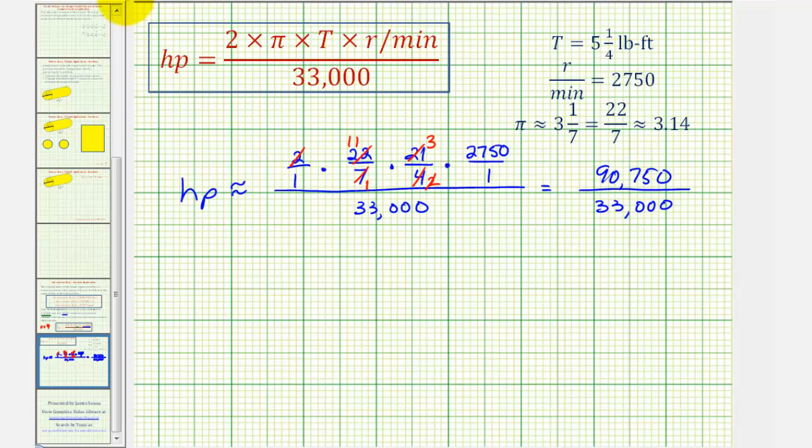Now let's focus on simplifying this fraction. Both of these would be divisible by 250, so let's start there. 90,750 divided by 250 is 363, and 33,000 divided by 250 is 132. Now at this point, it may be more difficult to simplify, but remember the divisibility rule for three is very helpful, which means if the sum of the digits is divisible by three, so is the number. 363 divided by three is 121. 132 divided by three is 44.